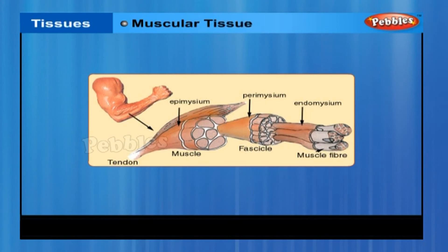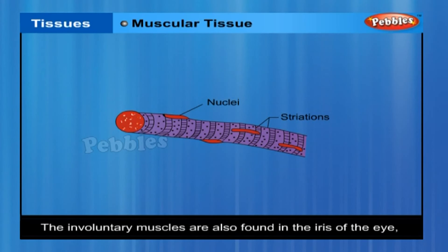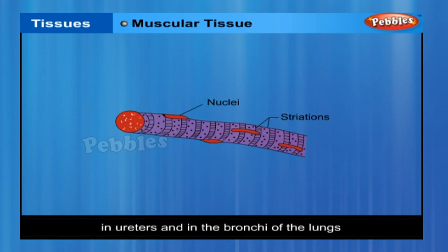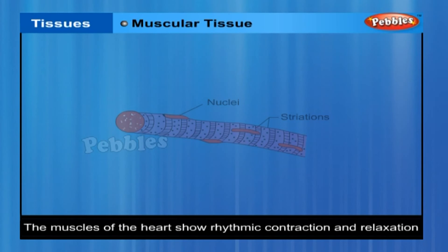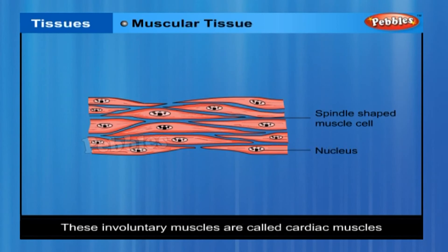The movement of food in the alimentary canal or the contraction and relaxation of blood vessels are involuntary movements. Smooth muscles or involuntary muscles control such movements. They are also found in the iris of the eye, in ureters and in the bronchi of the lungs. The muscles of the heart show rhythmic contraction and relaxation throughout life. These involuntary muscles are called cardiac muscles.